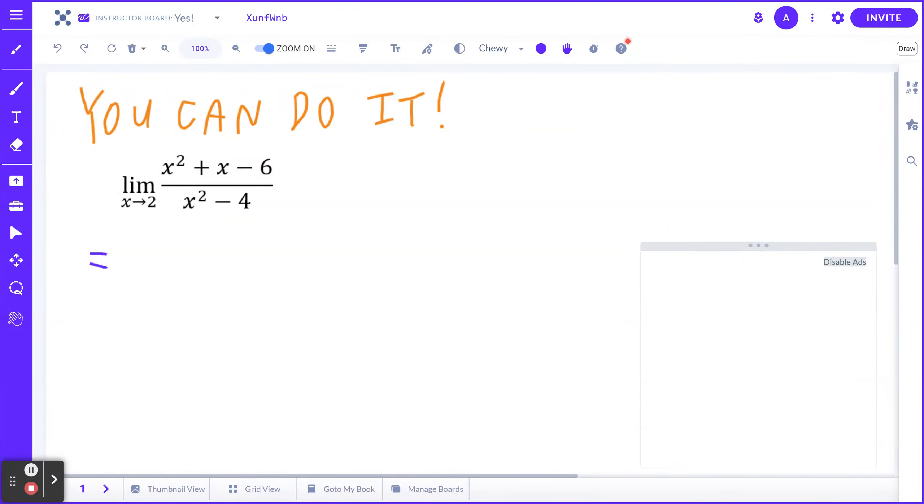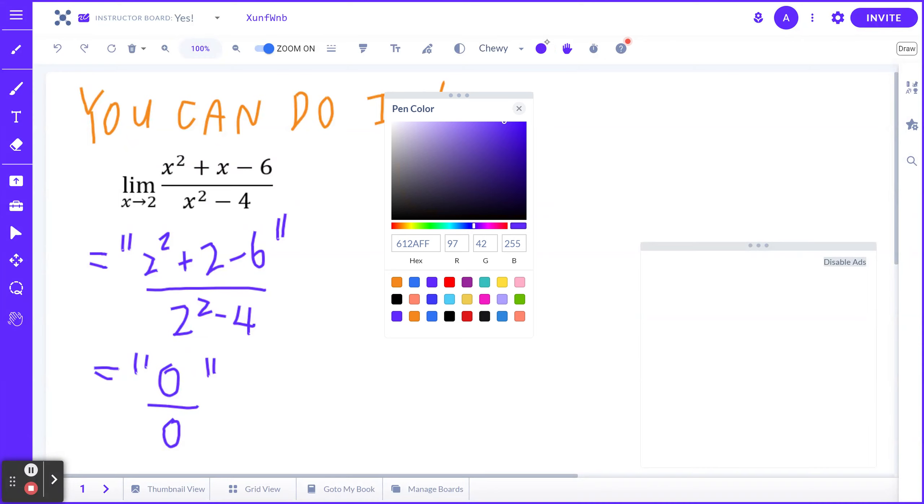Step number 1, if you plug in x to be 2, and I'll put this in quotation marks, this will give you 2 squared plus 2 minus 6 divided by 2 squared minus 4. And basically, this is going to be 1 of the 7 types of indeterminates. So this equals to 0 divided by 0. And that's okay, by the way.